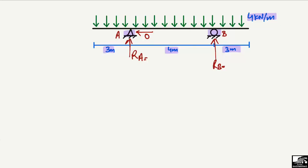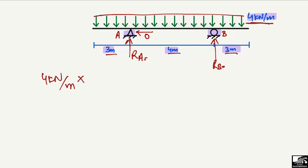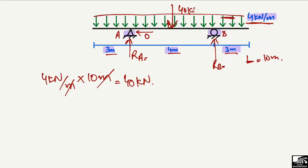To find the support reaction using the simple and easy method, I have to multiply the uniformly distributed load by the length of the beam on which it is distributed. So 4 kilonewton per meter multiplied by the total length — which is 3 + 4 + 3 = 10 meter — gives us 40 kilonewton. This converts the uniformly distributed load into a concentrated load of magnitude 40 kilonewton.